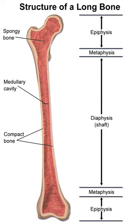The epiphysis is the rounded end of a long bone, at its joint with adjacent bones. Between the epiphysis and diaphysis — the long midsection of the long bone — lies the metaphysis, including the epiphyseal plate, or growth plate.